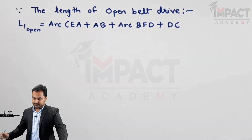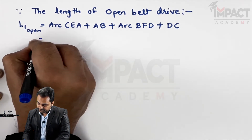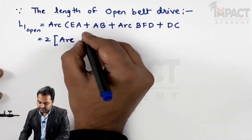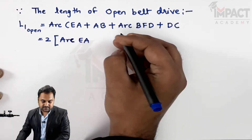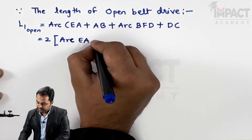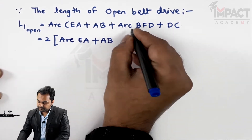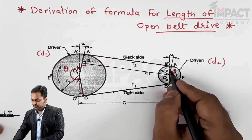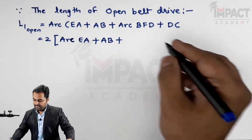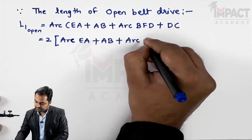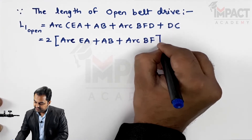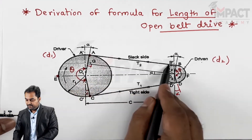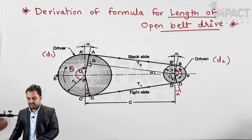Then multiply by 2 because the pulley is symmetric. So the formula becomes 2 multiplied by the bracket containing arc EA, plus AB, plus arc BF. No need to take DC separately, since multiplying by 2 gives us the total length.